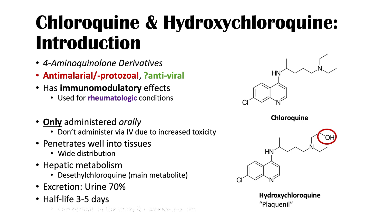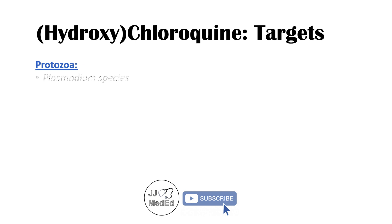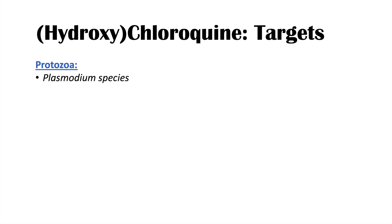Because of these medications' wide distribution in the body and their moderate half-life, they can last in the body for weeks to months. The main microbial targets of their use is protozoa. These include plasmodium species — protozoa that cause malaria. So these are commonly referred to as anti-malarial medications.